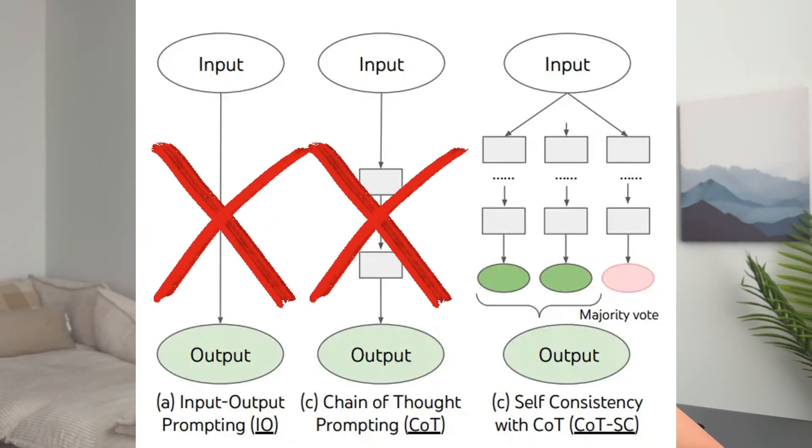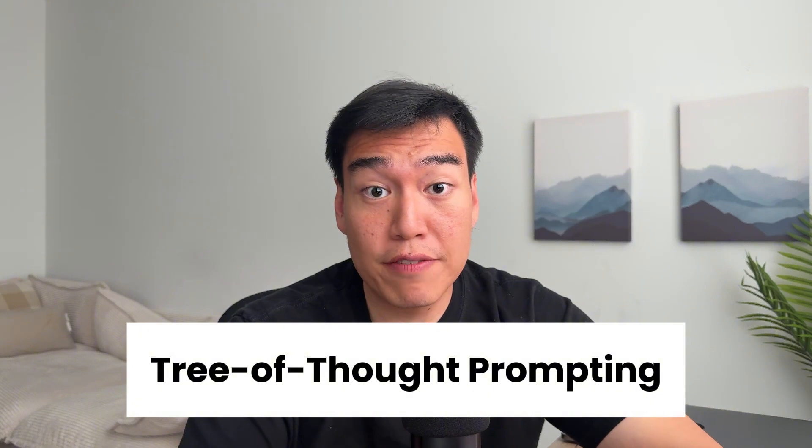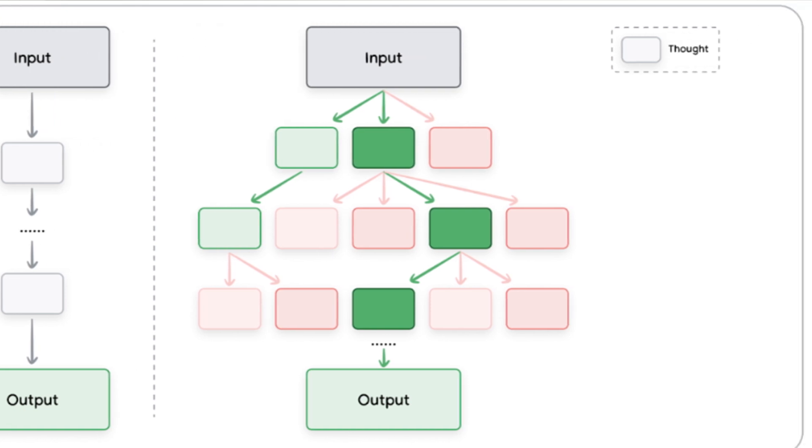We also have self-consistency, which takes chain-of-thought prompting one step further. Instead of prompting just once, you ask the AI model the same question multiple times, typically with a higher temperature to promote variety in the output, and then pick the answer that shows up most frequently. This helps generate more consistent answers and catch errors by comparing different attempts. Then there's tree-of-thought, which is the final evolution of chain-of-thought prompting. Rather than following one straight line of thinking, the AI branches out and considers several possible answers at once, then chooses the strongest one — helpful for complex tasks where there are many different routes to a solution.